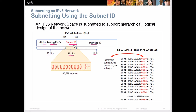In IPv6, our subnetting area is 16 bits long, giving us 65,536 subnets available. We increment our subnet ID to create those 65,536 subnets. Just to give perspective — that's not 65,536 host IP addresses; that's 65,536 subnets. We have our first 48 bits as the global routing prefix, then our 16-bit subnet ID, then our 64-bit interface ID.